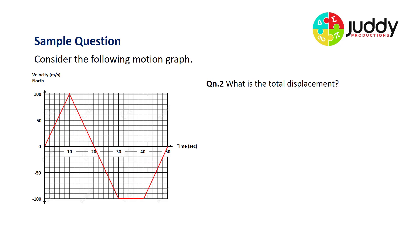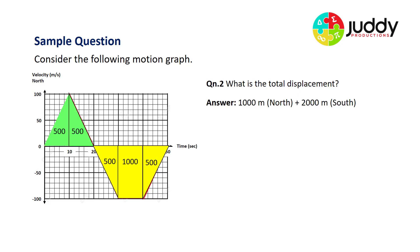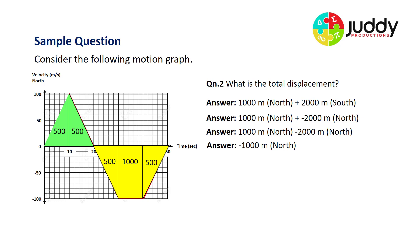Question two: what's the total displacement? To work out displacement, subtract north and south from one another. The yellow section shows 2,000 meters displaced south; the green section shows 1,000 meters displaced north. The southerly displacement is greater by 1,000 meters, so the total displacement is 1,000 meters south.